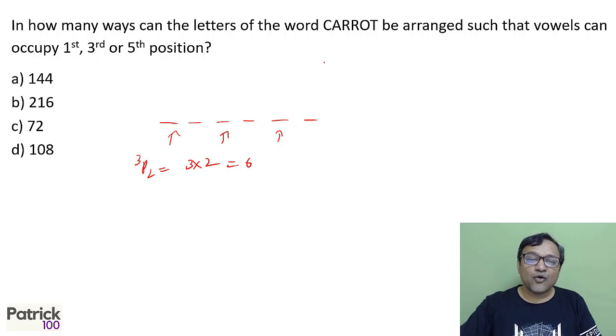The remaining 4 can be arranged anywhere. So it will be 4 factorial upon 2 factorial, 2 factorial because 2 Rs. 12 ways. So total number of ways becomes 6 into 12, 72 ways. C option is the answer.